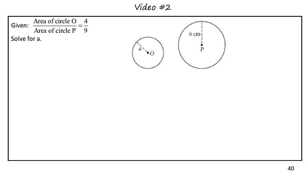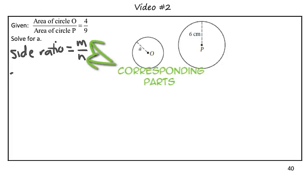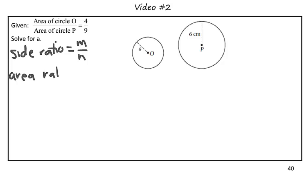If we have the ratio of the sides, or the side ratio, that is the ratio of M over N—and this is referring to the ratio of corresponding parts or corresponding sides—then we know that the ratio of their areas between the similar figures is going to be M squared over N squared.